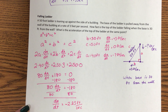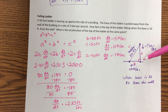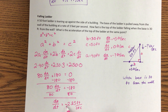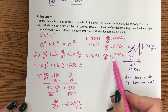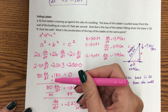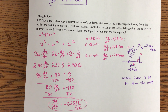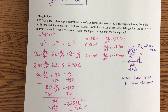Subtracting 180 from both sides: 80(da/dt) equals negative 180. Dividing both sides by 80: da/dt equals negative 2.25 feet per second. We got a negative number, which we predicted — the height a is decreasing so it should be negative. The next question asks for the acceleration of the top of the ladder, which would be the second derivative.